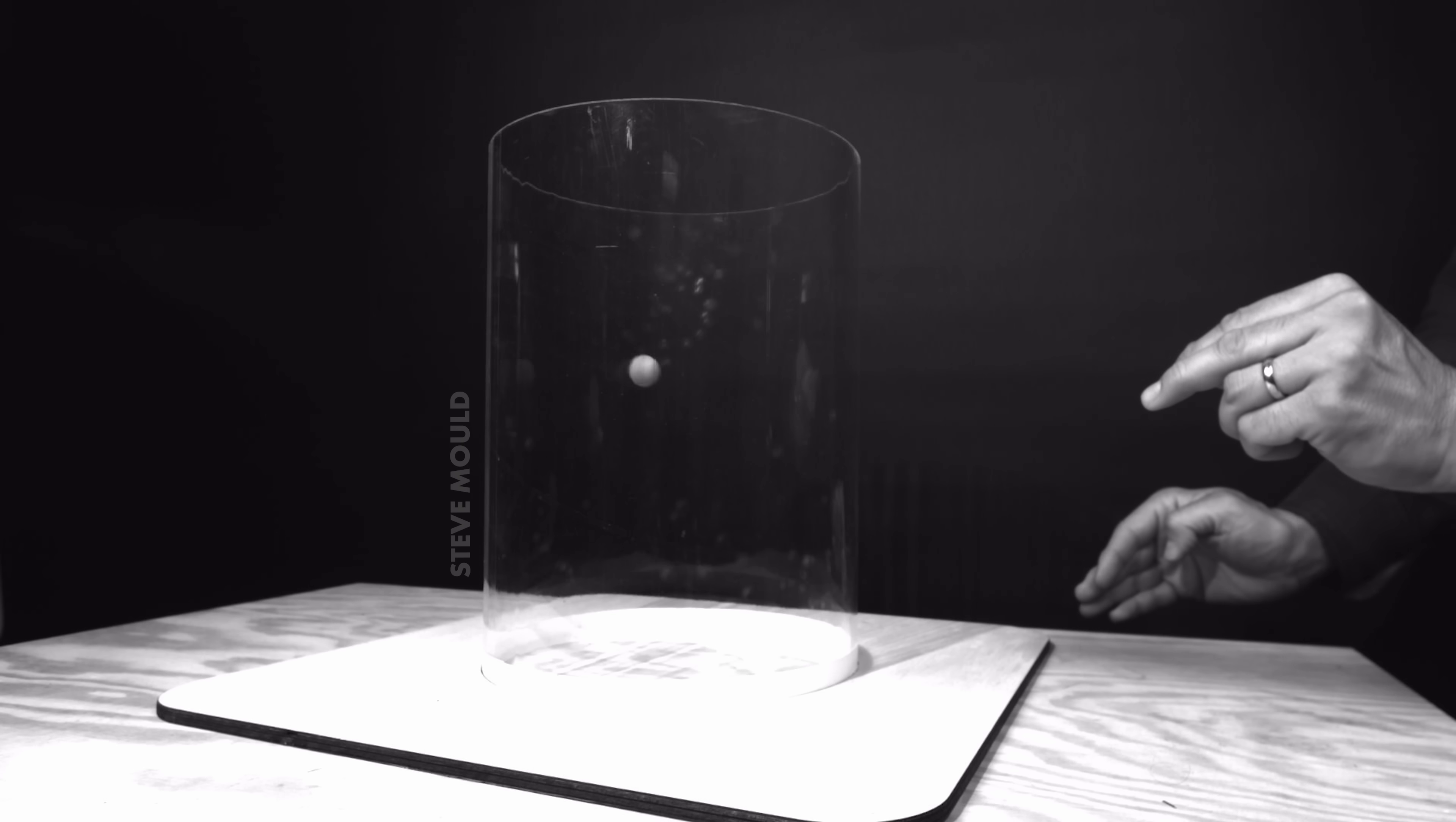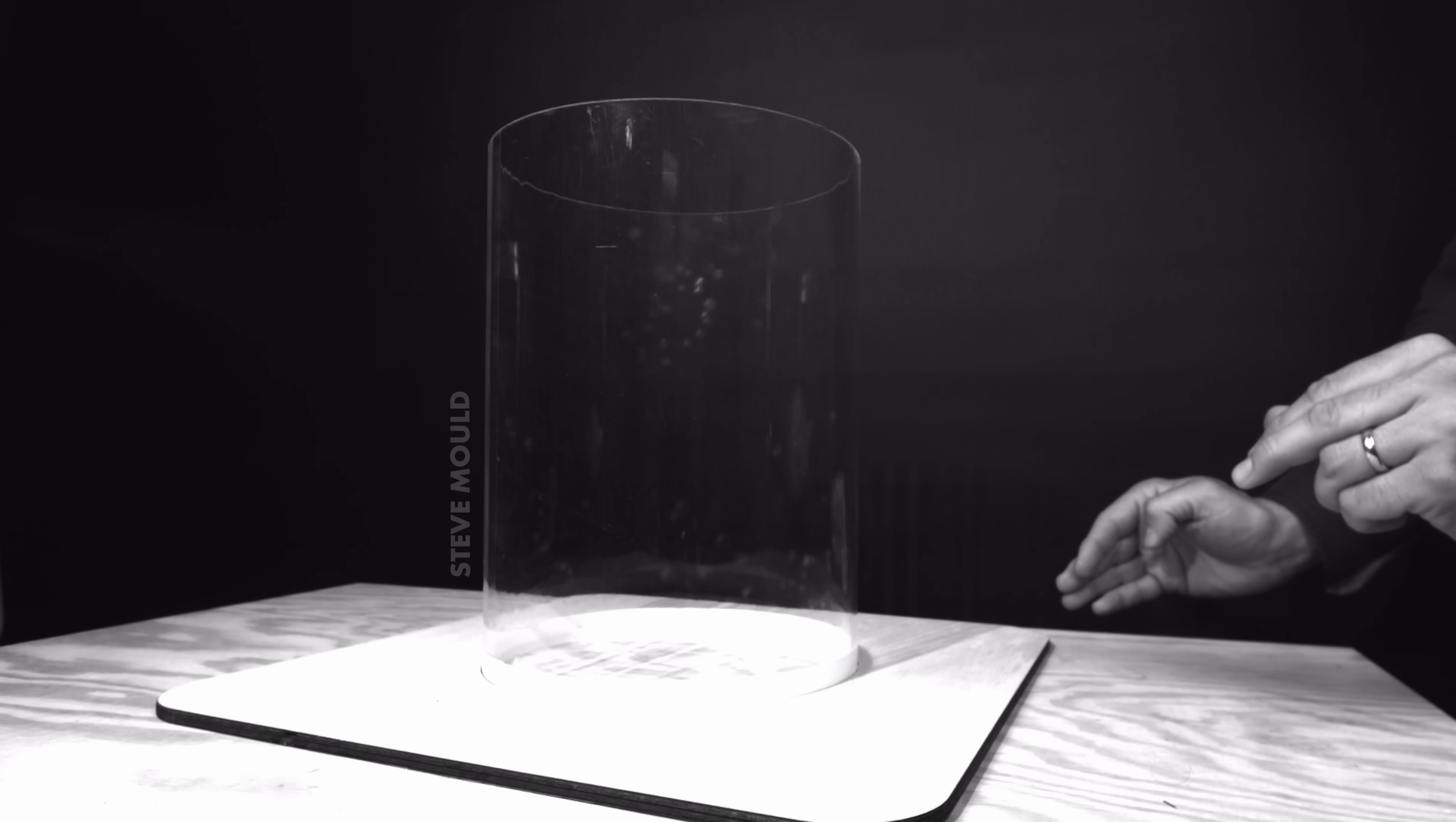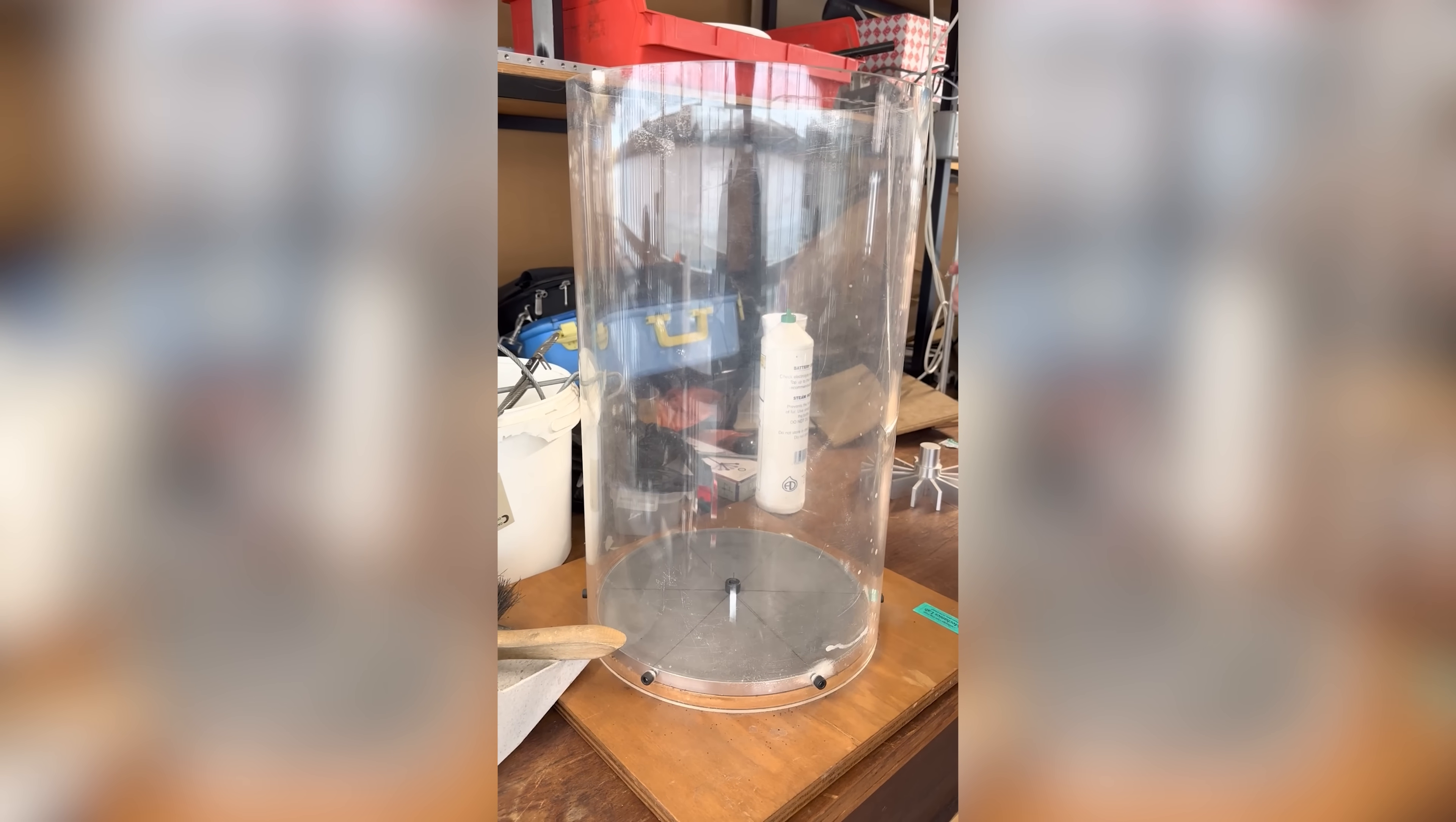If you throw a ball into a cylinder at the right speed in the right direction, it will come back out again. But why does that happen? Ever since my friend Hugh Hunt showed me this demonstration, I've been trying to figure out an intuitive explanation for what's going on.